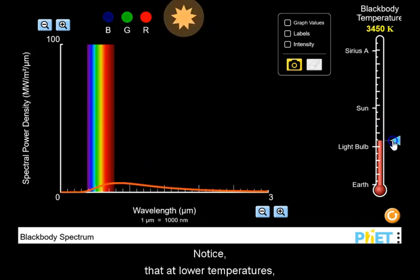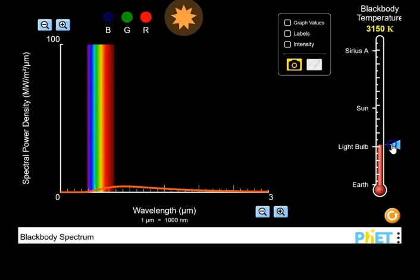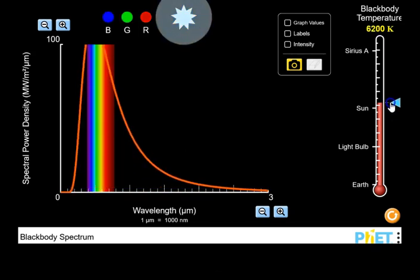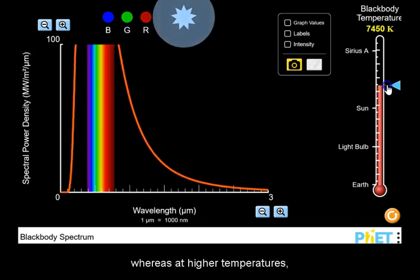Notice that at lower temperatures, red dominates, and the overall hue will become redder, whereas at higher temperatures, blue dominates, and the overall color of our star will be bluer.